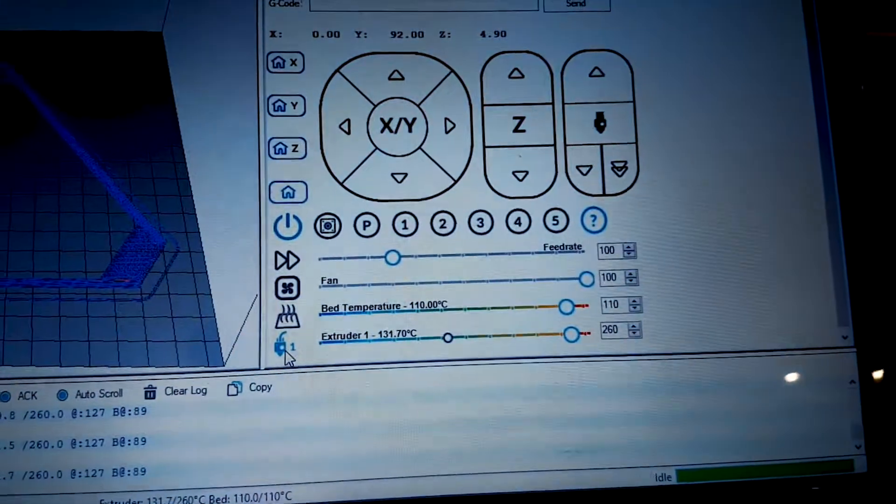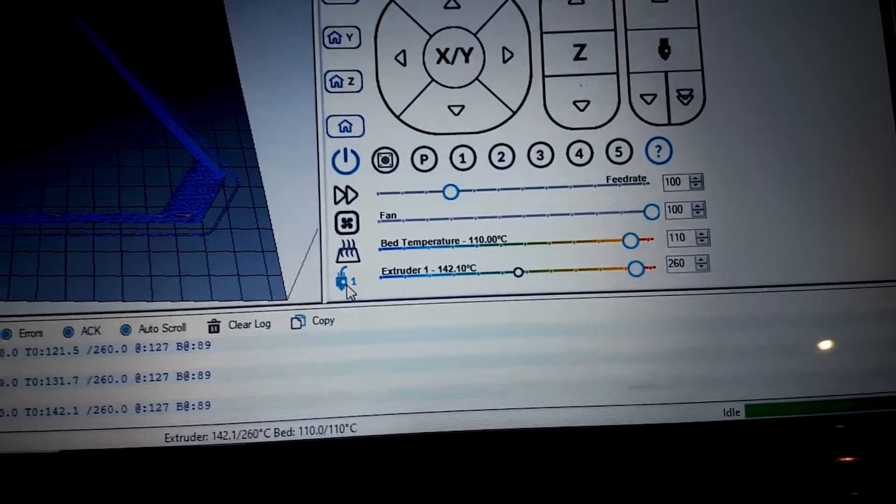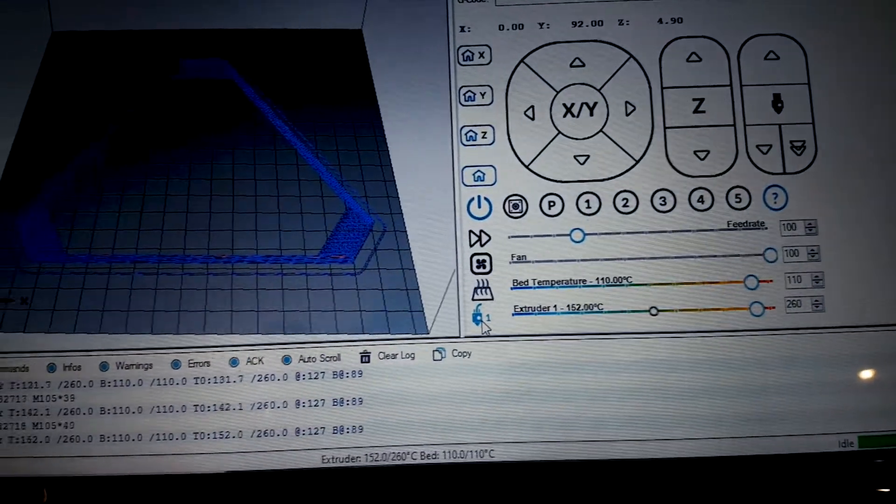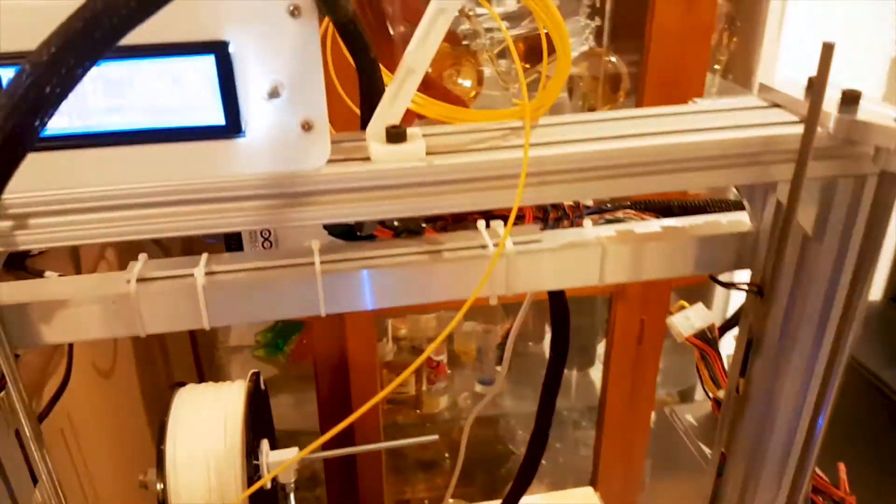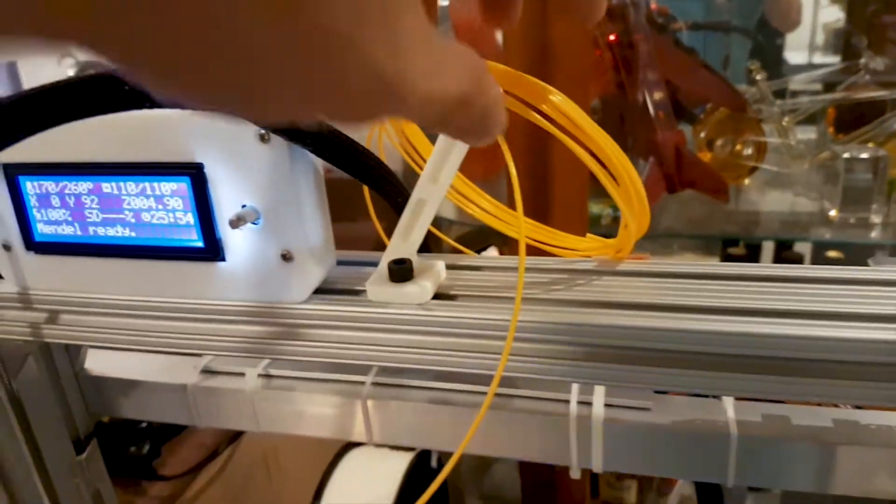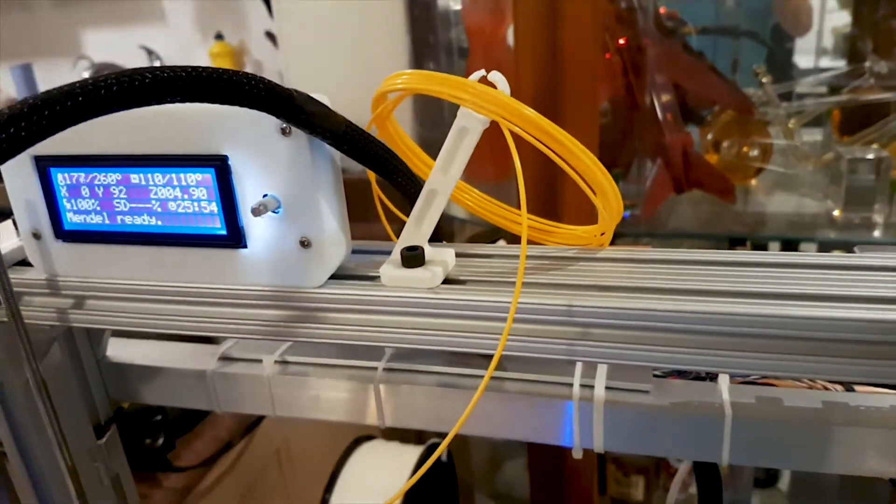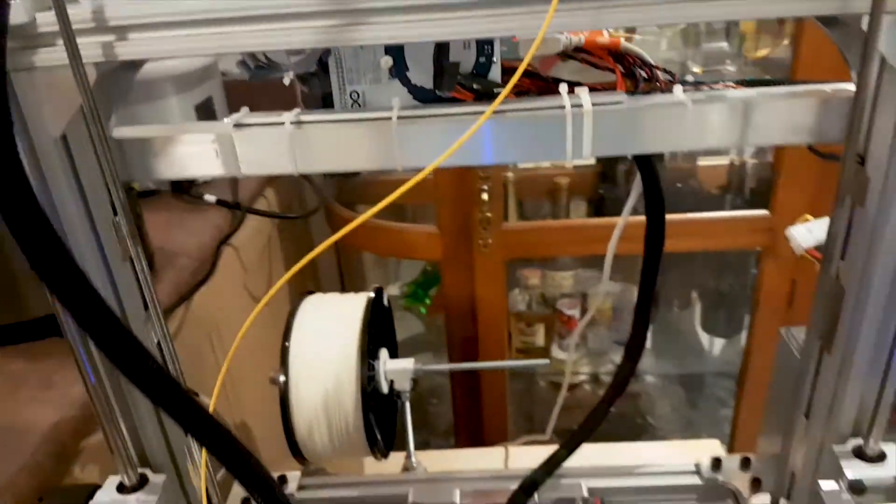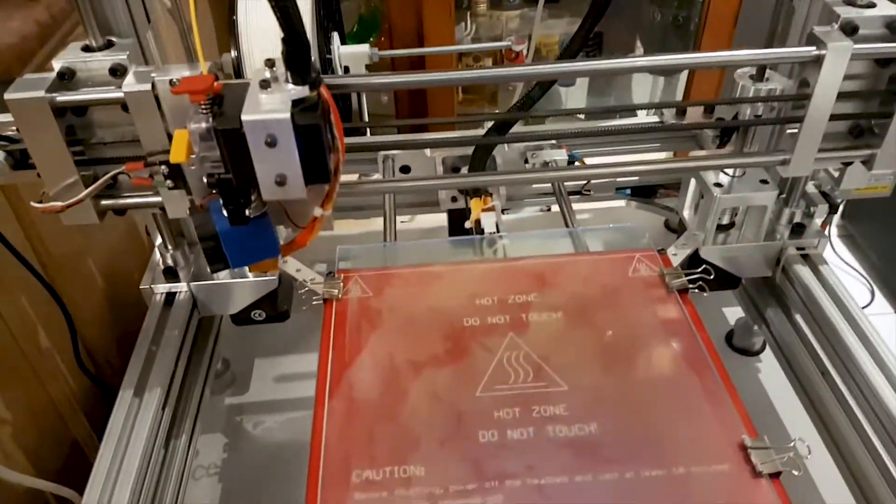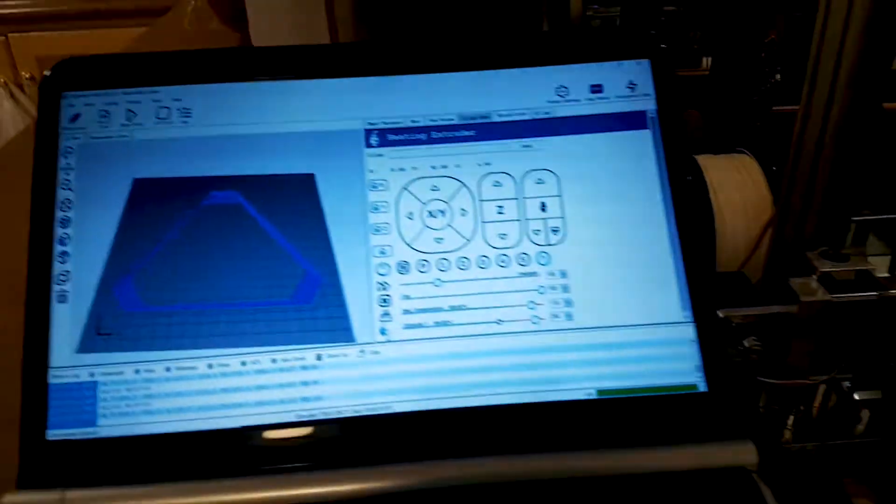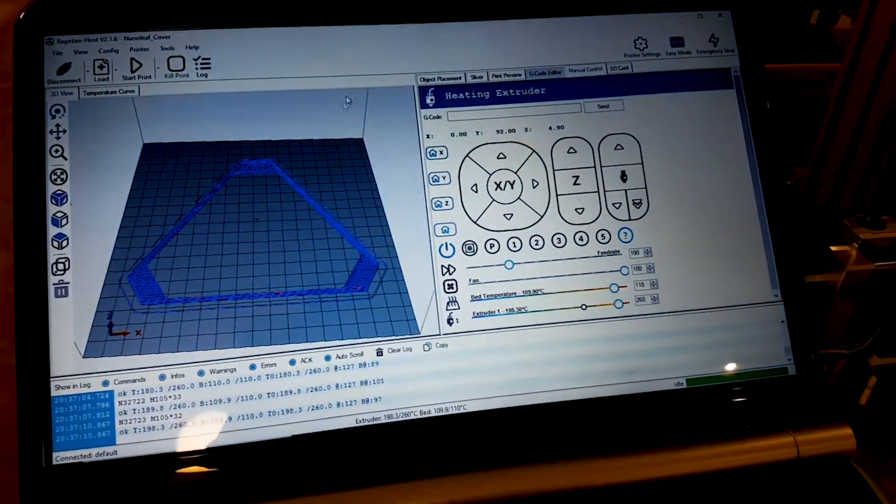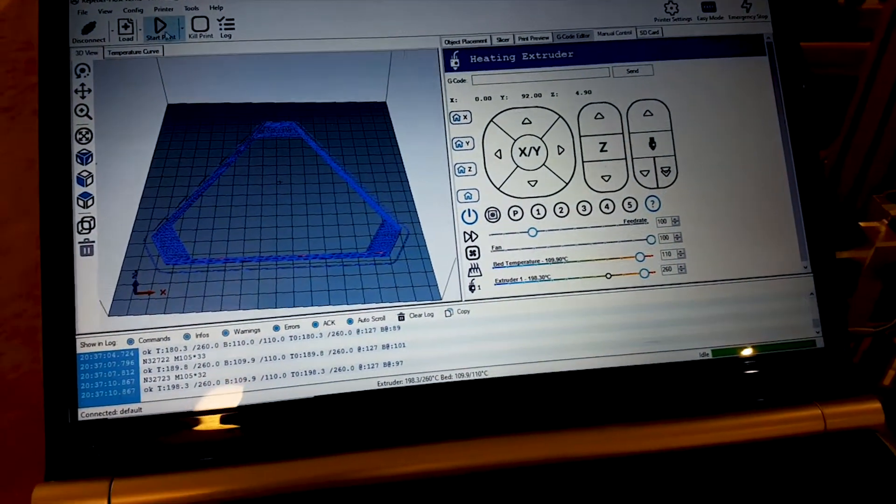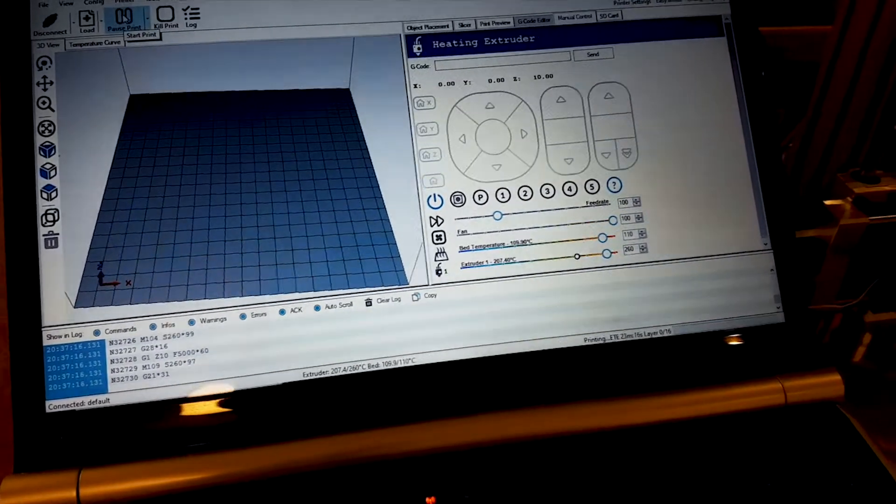So right now my heat bed is at 110 degrees Celsius for printing the ABS plastic. I have a little pool, a little section of ABS left that I'm gonna print out—the cover for my LED project. So I have it set up and ready to print. I'm gonna hit start print.